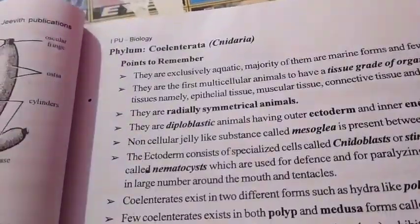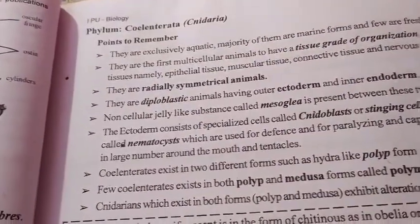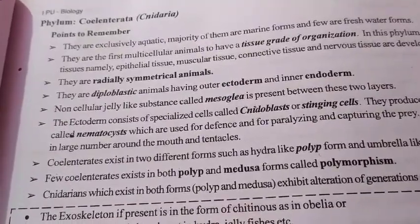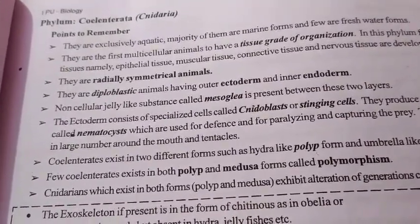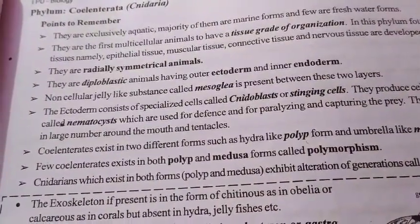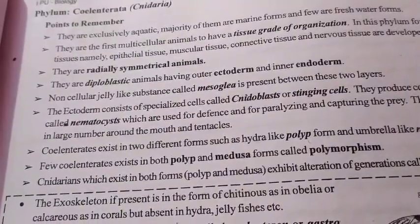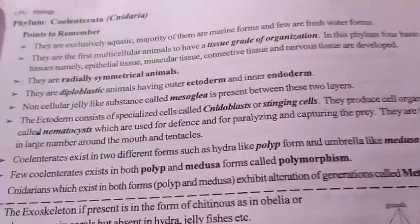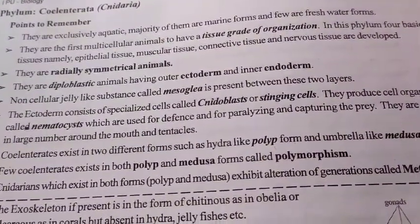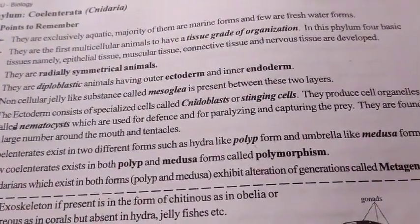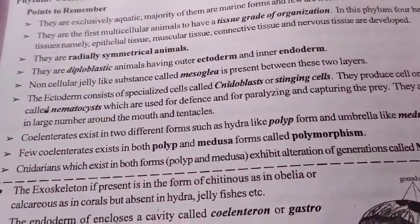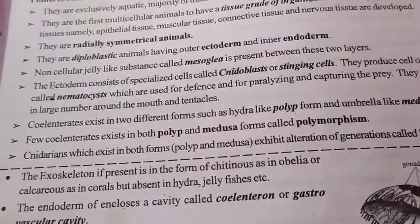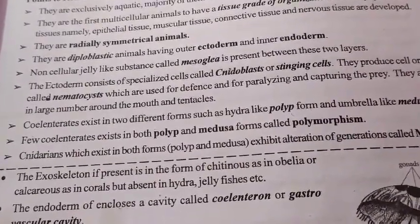Next is Phylum Cnidaria. Here are some general characteristics: they are exclusively aquatic organisms. They are the first multicellular animals to have a tissue grade of organization. In this phylum, four basic tissues — namely epithelial tissue, muscular tissue, connective tissue, and nervous tissue — are well developed. They are radially symmetrical animals and diploblastic animals, having an outer ectoderm and inner endoderm.